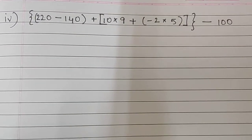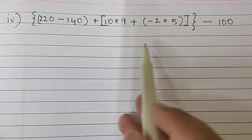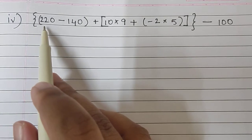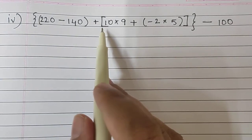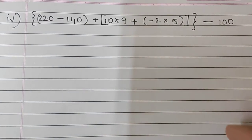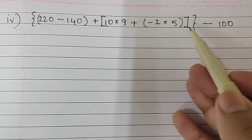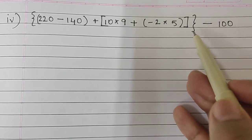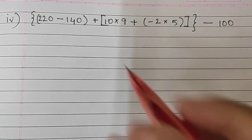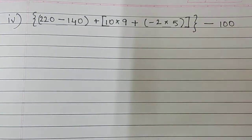Moving to sum number 4. Now here you can see so many brackets — there is a curly bracket, a round bracket, and a square bracket. Whenever we have to solve such sums, we always begin with round brackets, then move to square brackets, and then go to curly brackets. So first we will go with the round brackets — there are two round brackets, so we will begin with both.